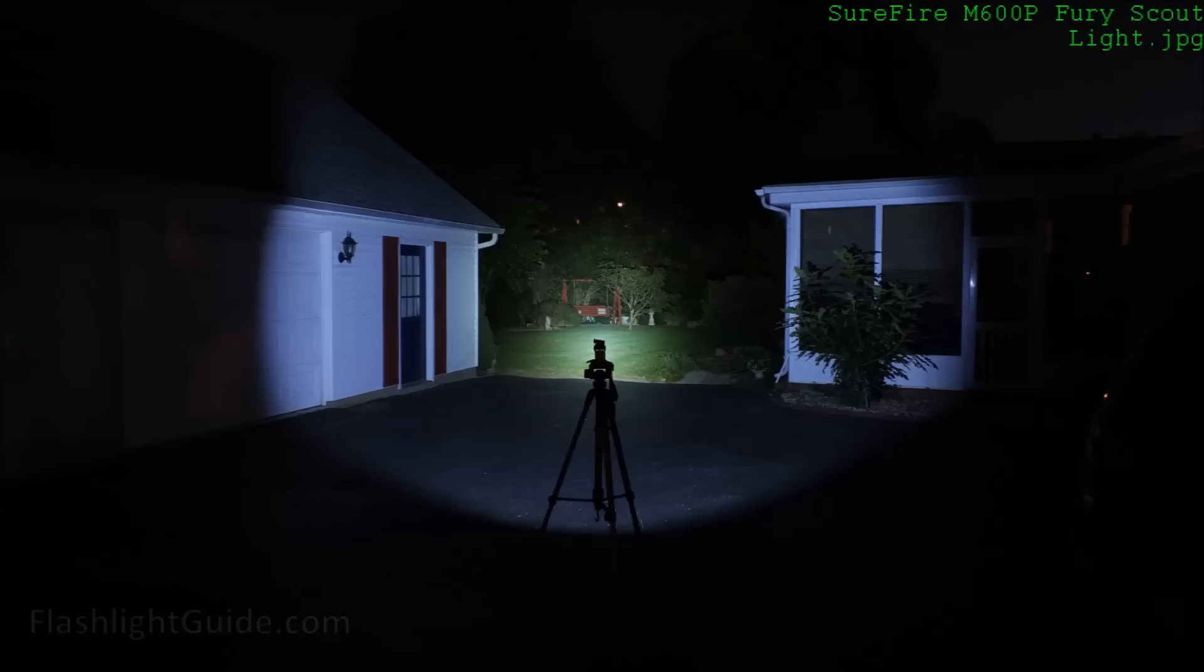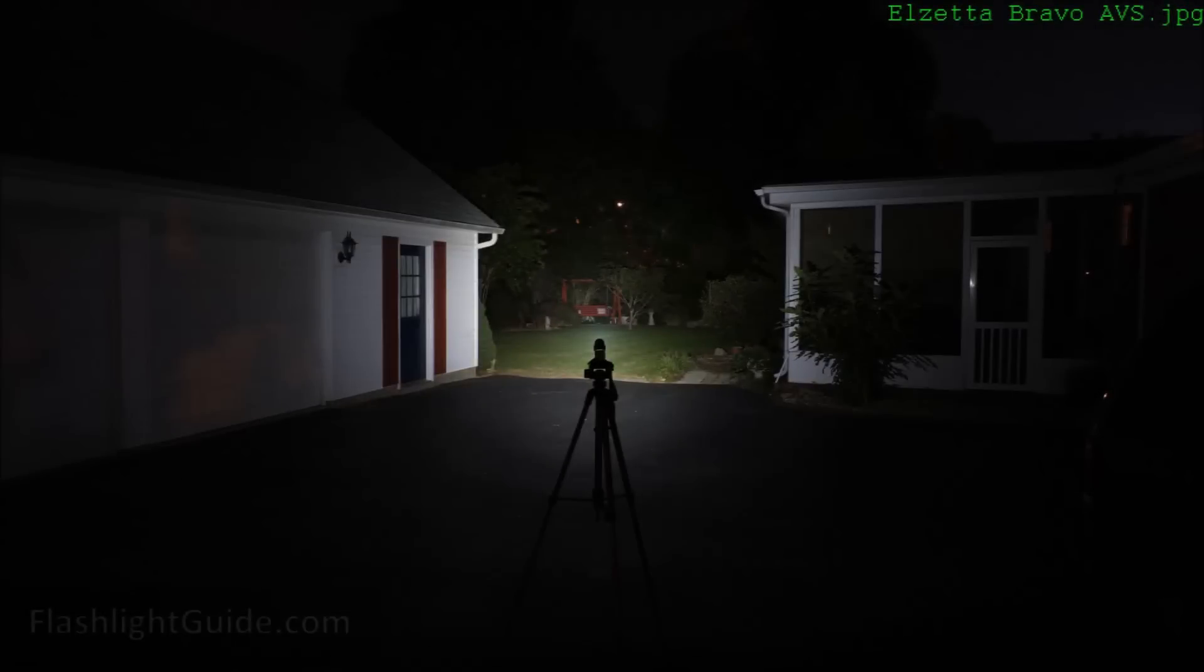Now let's compare this photo to one taken under the same conditions in the same location with an LZ Modular Flashlight. This is an LZ Bravo with a high-output AVS head. Notice the coloration differences. Notice that the colors I mentioned before now are obvious. Now they are apparent.